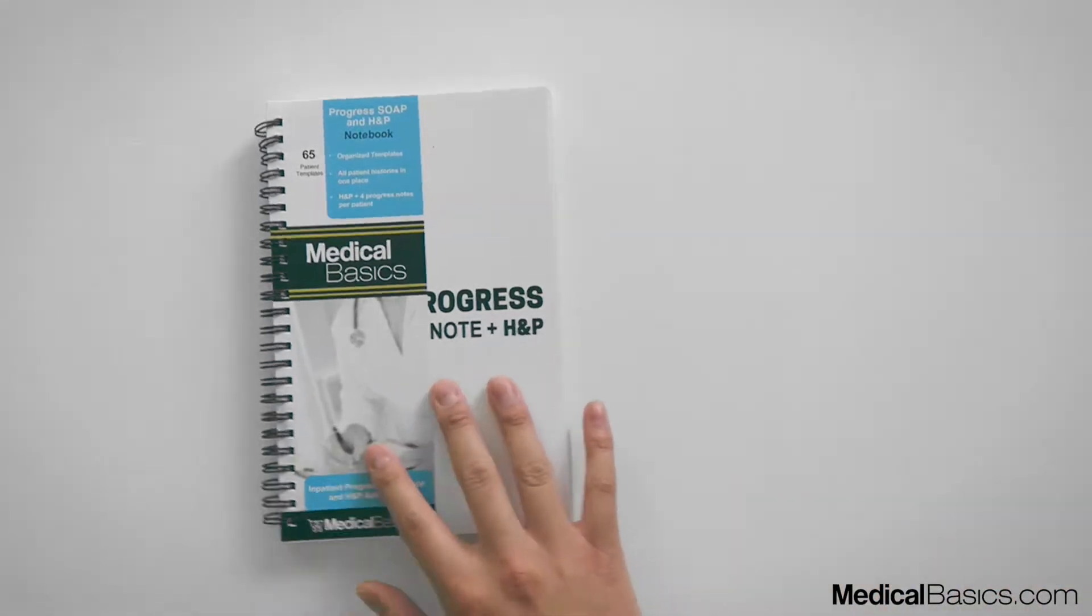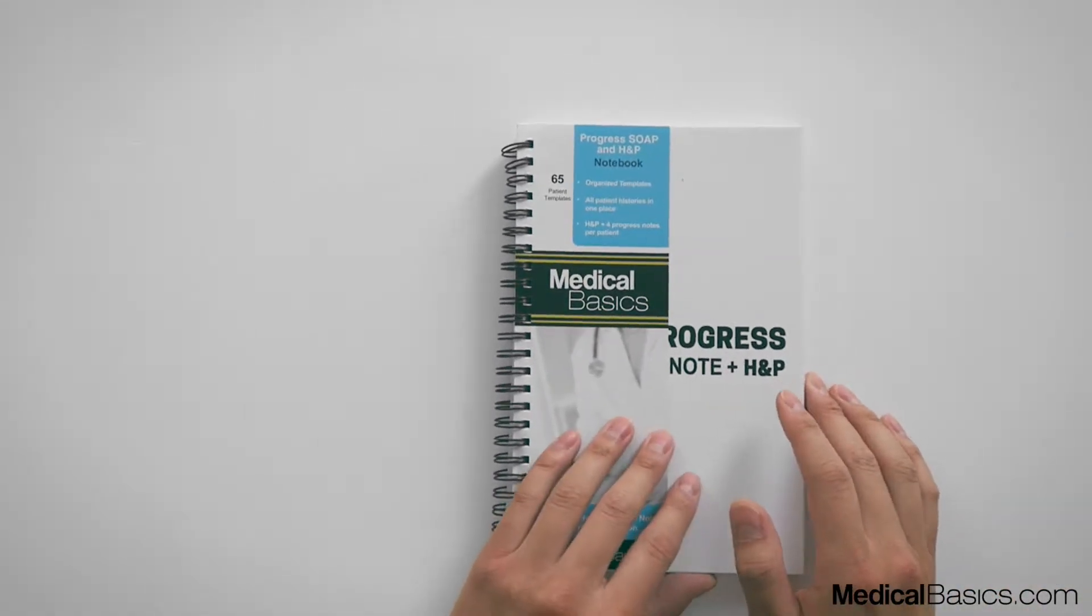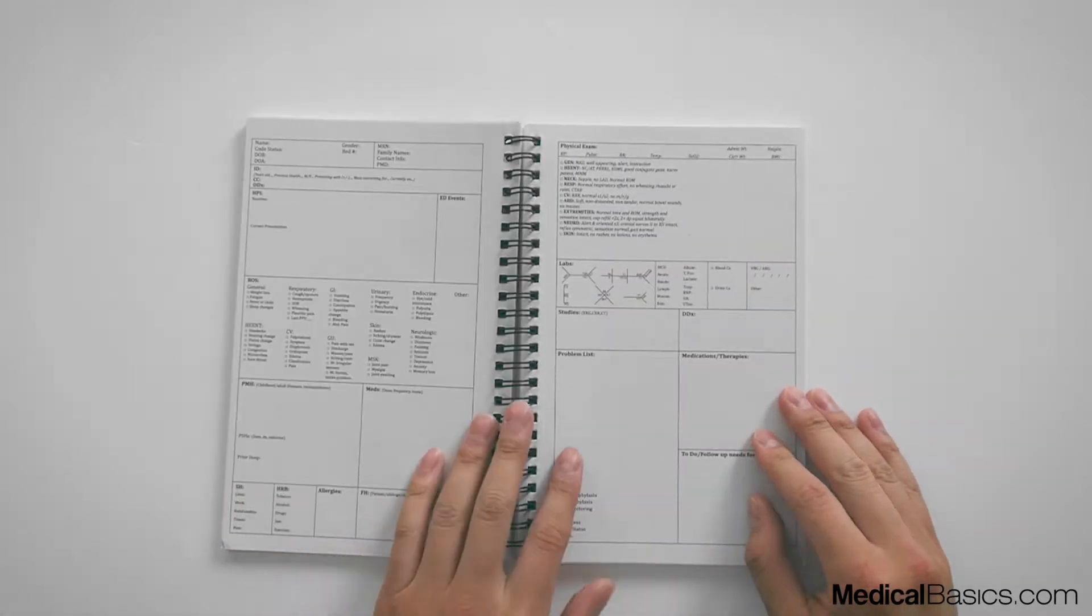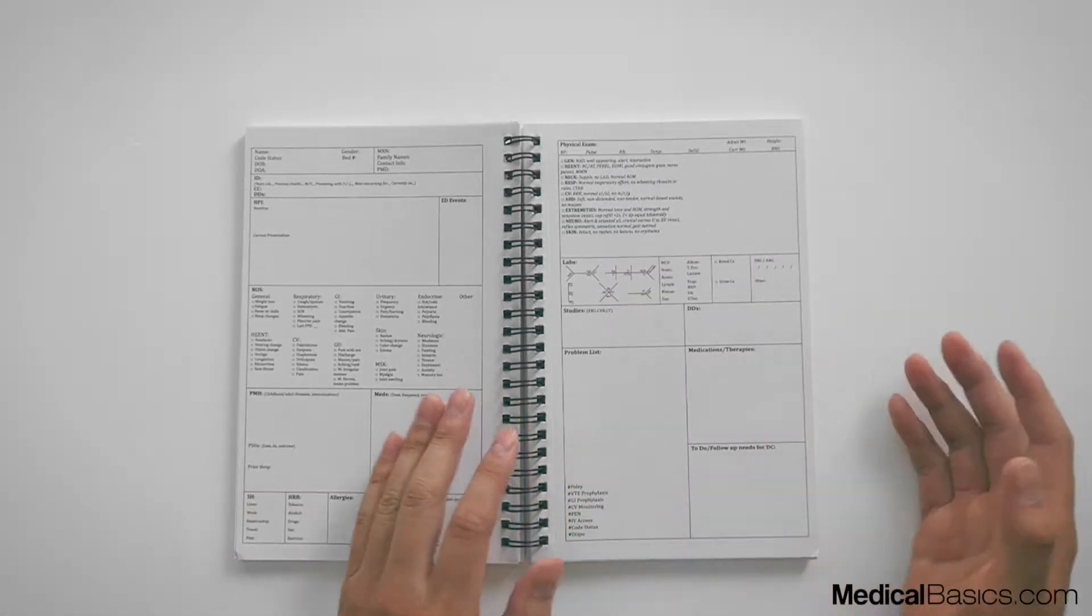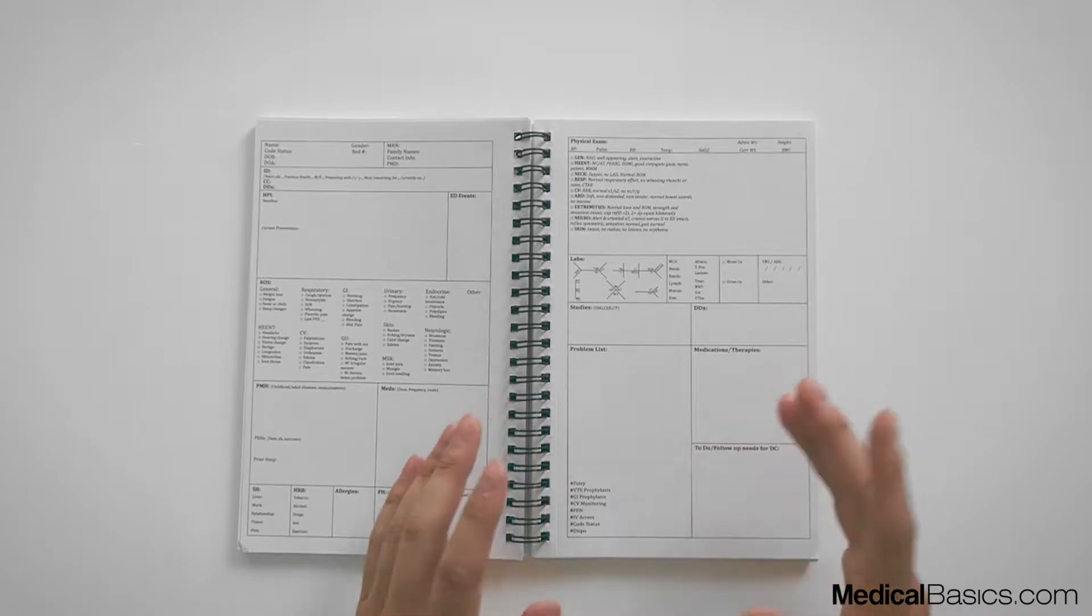And so we're going to be talking about this notebook as the example, the progress notebook, because it has everything that the other notebook, the H&P notebook, has but a little bit more.